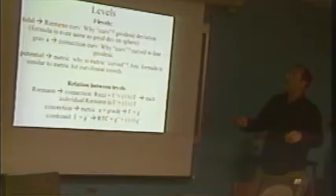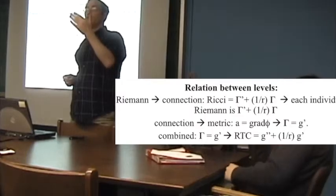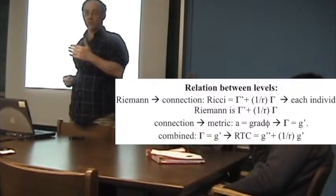We know how to compute the Riemann curvature given the connection. Now, what is the relationship between the connection and the metric? We know that the Riemann is related to the connection in this way. Each Riemann has this structure. If you sum the Riemanns, you get this.